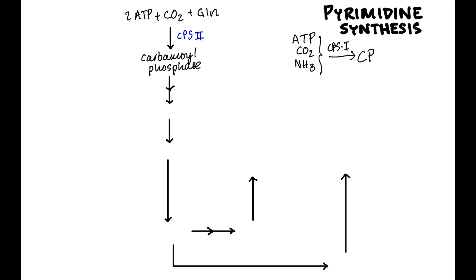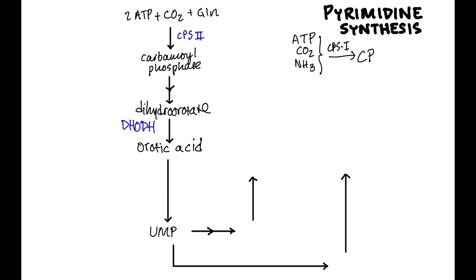So we have carbamoyl phosphate, which gets converted through multiple steps to something called dihydroorotate. Then we take dihydroorotate and convert it to orotic acid — also called orotate. The enzyme that does this is dihydroorotate dehydrogenase (DHODH). Orotic acid then gets converted to UMP through a couple of steps using a complex of enzymes called UMP synthase. UMP is kind of the grandfather of the pyrimidines — the equivalent of IMP in purines.